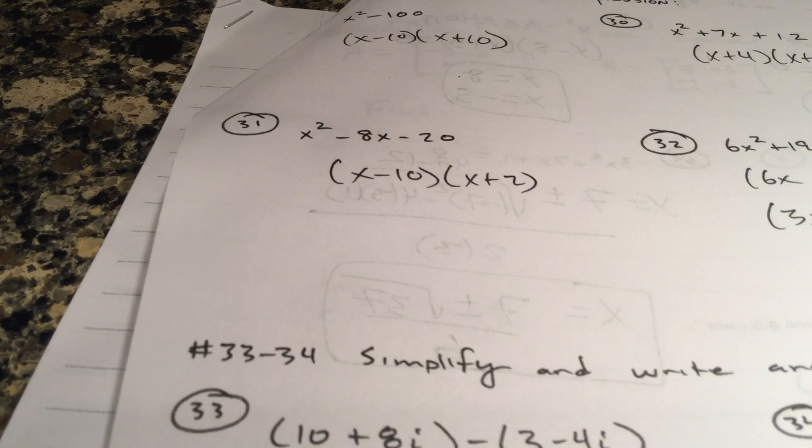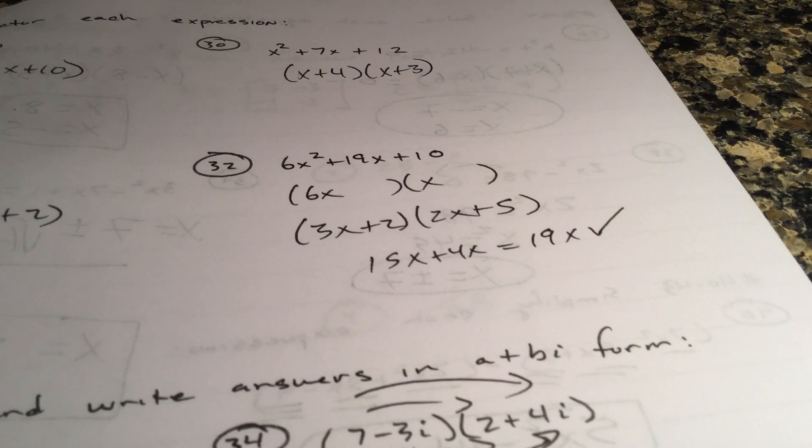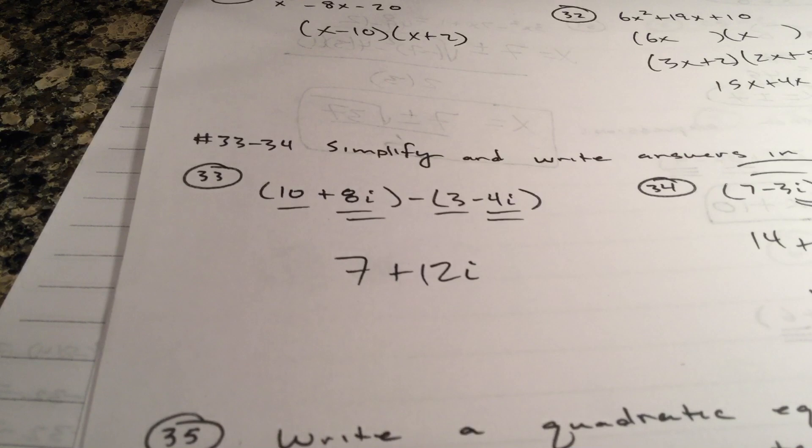What multiplies to 20, differs by eight. It's negative 10, two. You're gonna use guess and check. So I thought originally six and one. It's not 6x squared, it is 3x and 2x, then plus two plus five. That might take a little bit of time, but you do have to factor. You're not using the quadratic formula, folks. You're not solving.